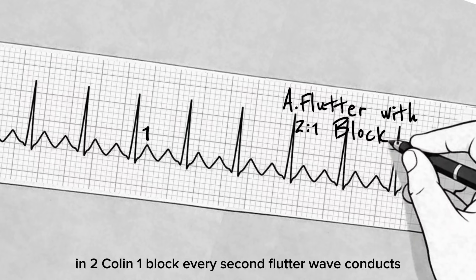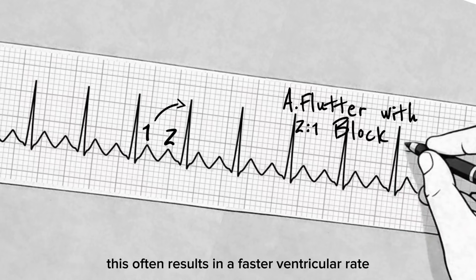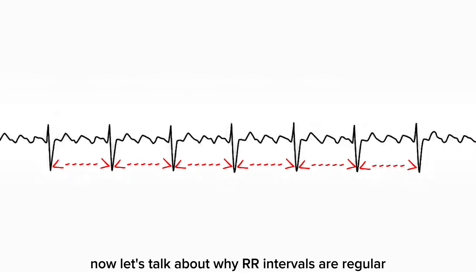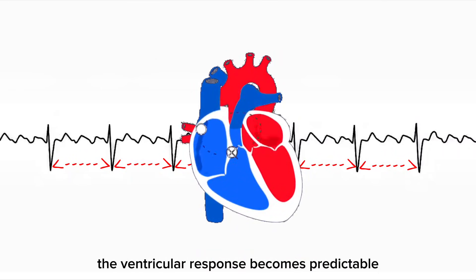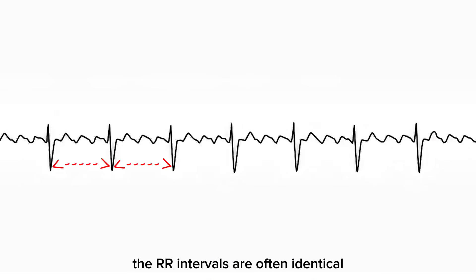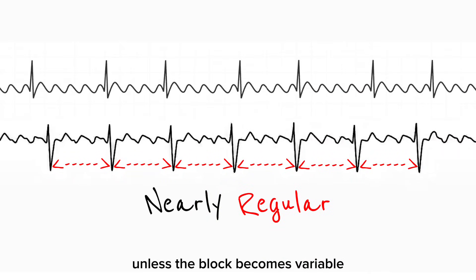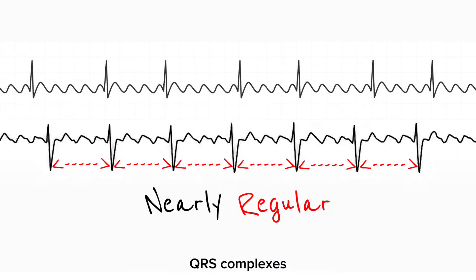In 2-to-1 block, every second flutter wave conducts. This often results in a faster ventricular rate and can sometimes be confusing for beginners. Because the AV node blocks impulses in a fixed pattern, the ventricular response becomes predictable — that's why in atrial flutter, the RR intervals are often identical. The rhythm appears regular or nearly regular, unless the block becomes variable, in which case you should still expect consistent spacing between QRS complexes.